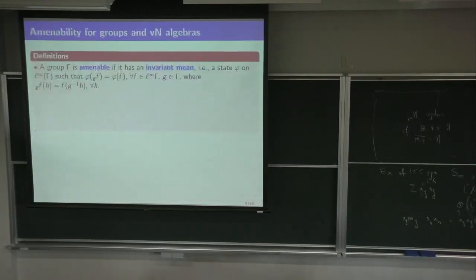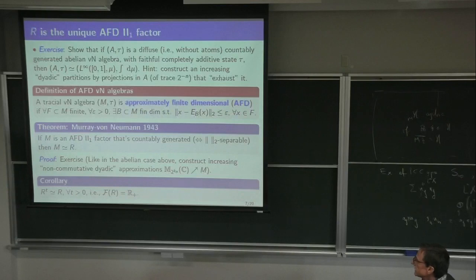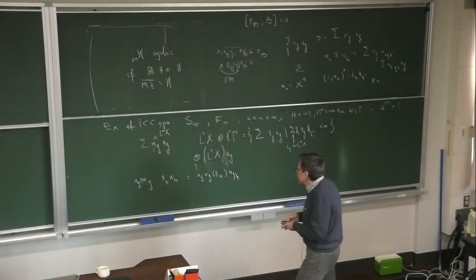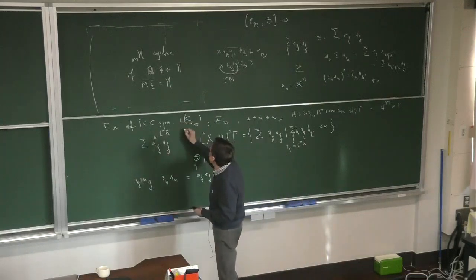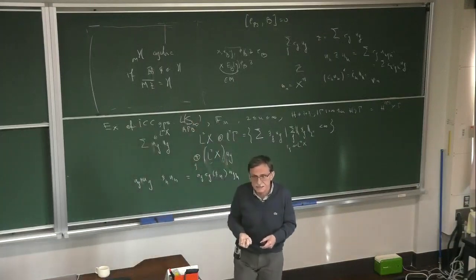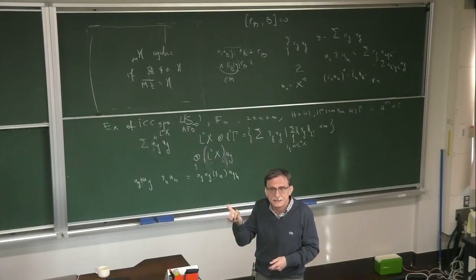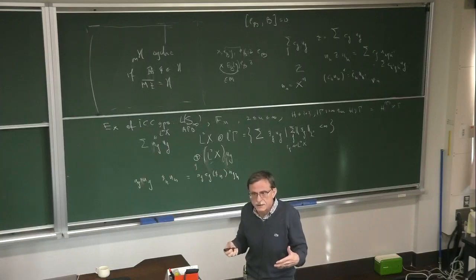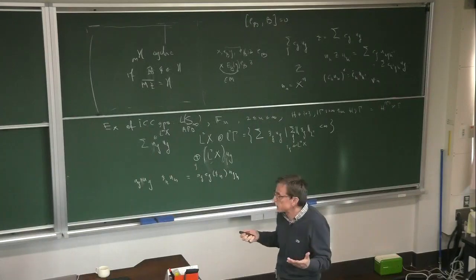After the break, we'll introduce the notion of amenability and prove Connes' theorem. You should notice that we have other examples of AFD algebras — not only R^t. For instance, if you take the group S_∞, which is locally finite, L(S_∞) is obviously AFD. Any locally finite ICC group gives a II₁ factor that is AFD. Also, any free ergodic action of S_∞ on a probability measure space gives an AFD von Neumann algebra.